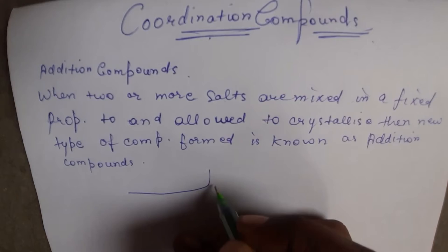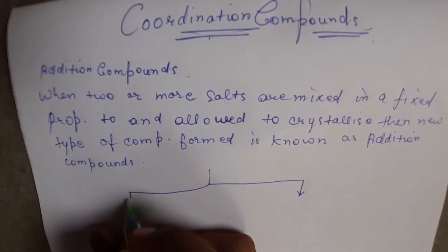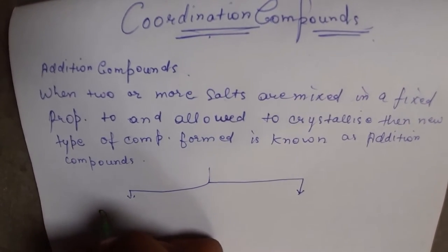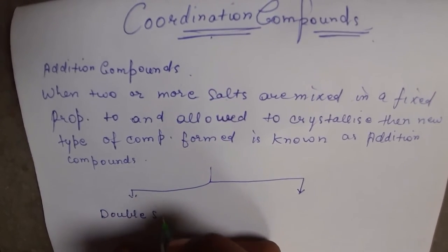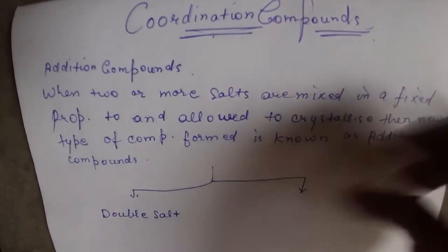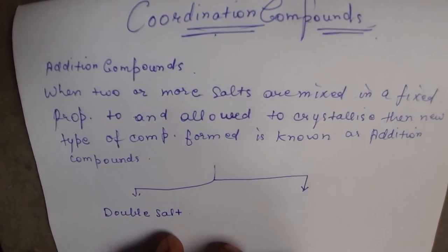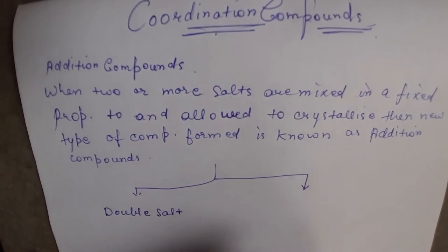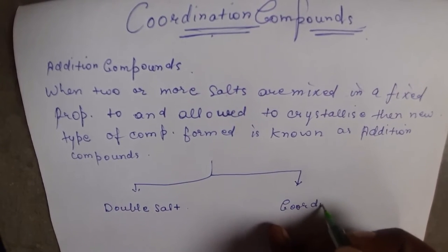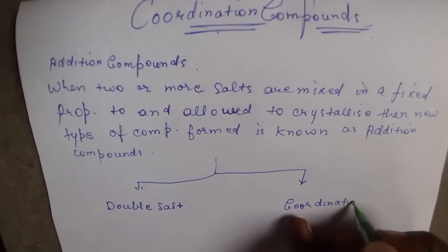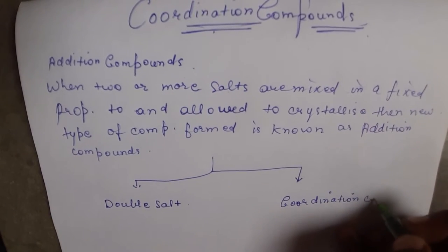Now we'll look at the types of addition compounds. Addition compounds are of two types. The first type is called double salt. One salt combines with another salt to form a double salt. This is distinct from Coordination Compounds, which we will focus on in this series.